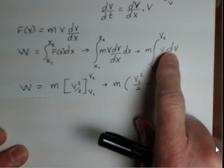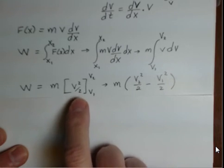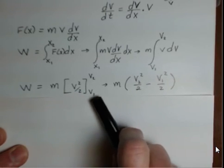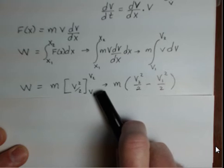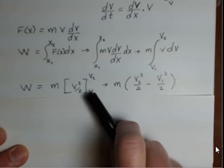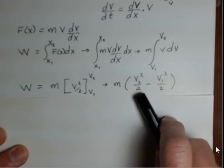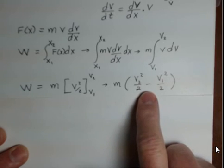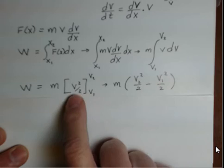The anti-derivative of v dv, we get v squared over two. We have to evaluate that at the two limits, the upper limit and the lower limit. So we first put in the v2, we get v2 squared, and then we subtract when we insert the value of the lower limit, so v1 squared over two.